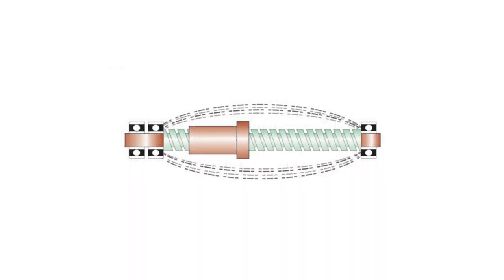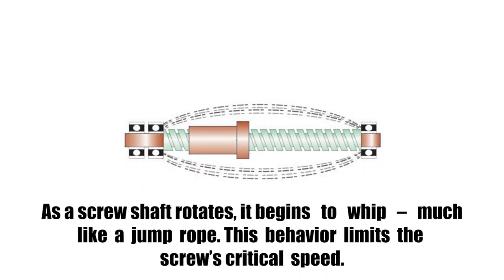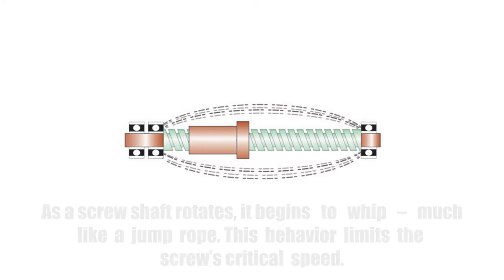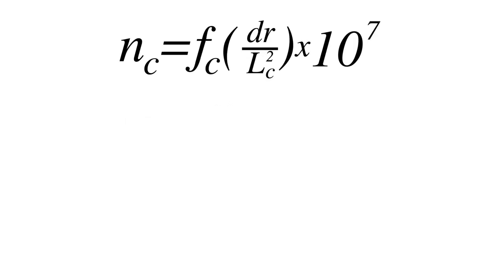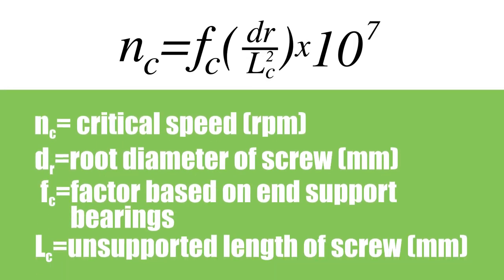Like any long cylindrical object, a ball or lead screw shaft will naturally bend or sag due to its own weight. When the screw rotates, it tends to vibrate, or whip, like a jump rope. The speed at which the screw starts to encounter these bending vibrations is known as its critical speed.